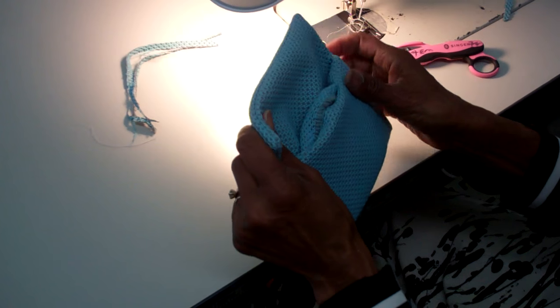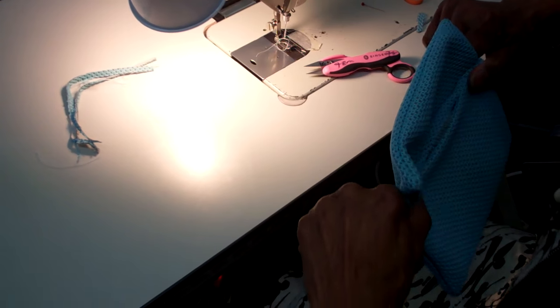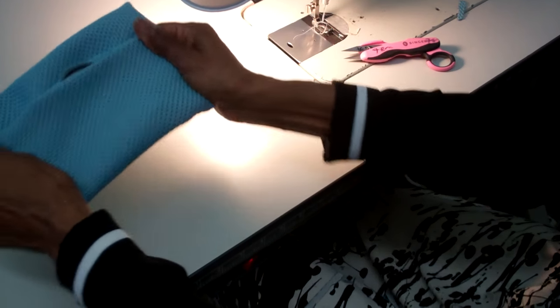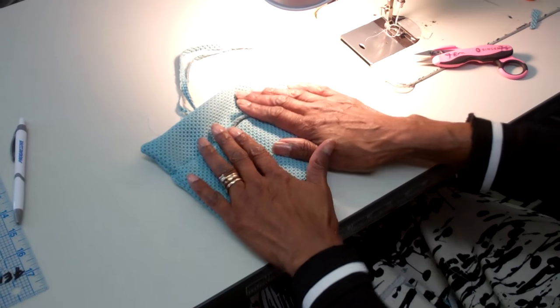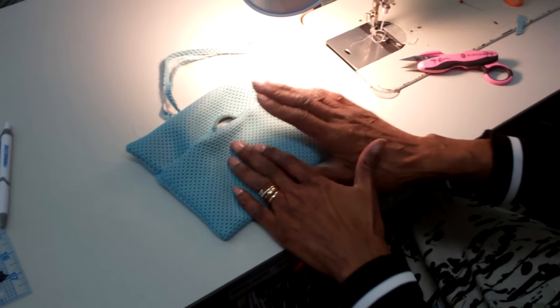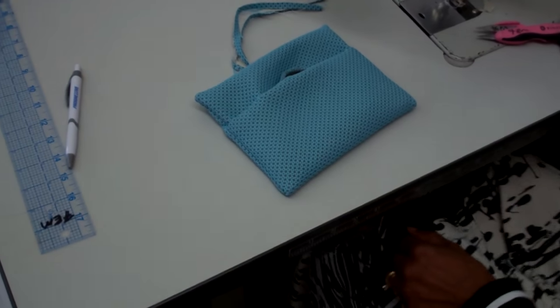Alright. Clutch. So you just determine whatever size you want to make your clutch. That's all. But that's the steps to doing it. This is just our mini version. It's like a cell phone bag now, right? Alright. Sweet. Thank you.